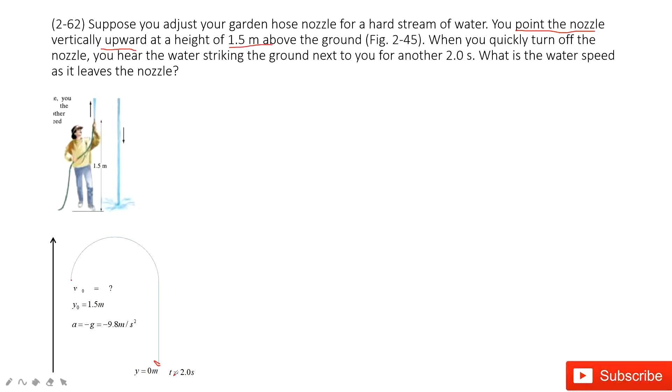It asks you what is the water speed at the initial point, so it asks for v0. For these problems, we list all the known quantities. We know the initial position, final position, the time taken, and we also know the acceleration. We want to know the initial velocity.